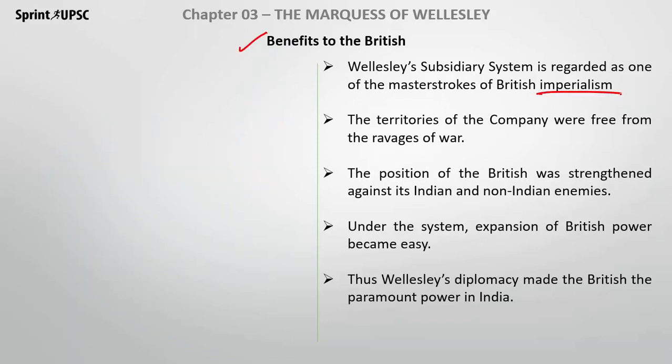What were the benefits to the British? It was imperialism's master stroke. The territories of the company expanded, and the war's burden was kept far away from them, as the allied rulers would handle defence. The kings who were employing armies had their soldiers reduced, weakening their military strength. Both Indian enemies and non-Indian enemies who could get support from Indian rulers were neutralized. This system made the expansion of British power very easy, making them the paramount power in India.